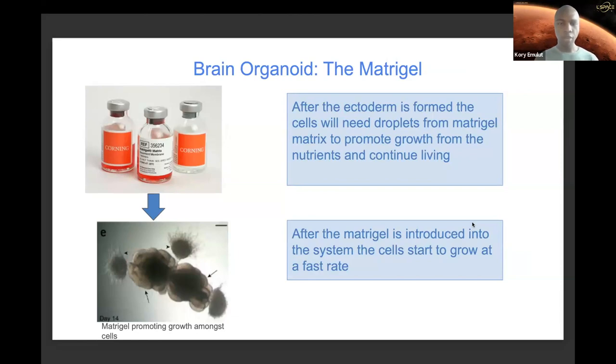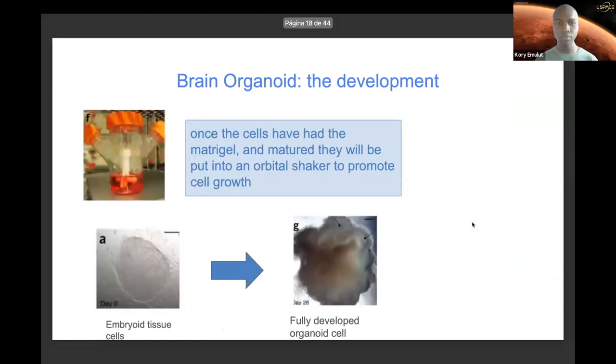To combat that, we're going to insert them with matrigel, a few droplets. The matrigel is going to make them expand, get bigger, and keep them alive. As you can see below, they start to take a more unique shape from the circular ones. The matrigel promotes growth, and we'll put them in an orbital shaker, an incubator that's going to promote the cell growth inside.